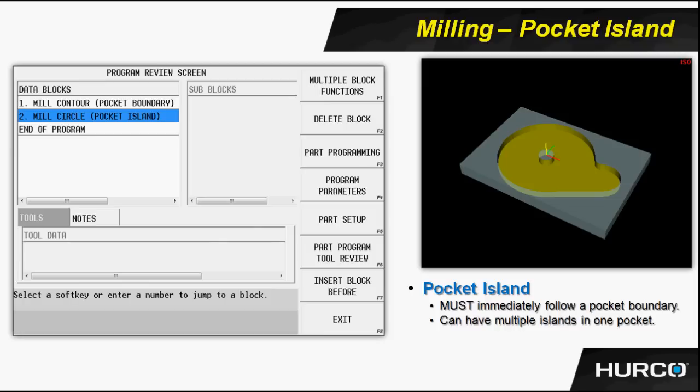For example, block one could be a mill contour pocket boundary, and then block two, block three, block four, and so on could all be pocket islands. I could not have anything in between two pocket islands, or the second island would not be able to be cut. It would actually throw an alarm — it would be an unassociated pocket island.